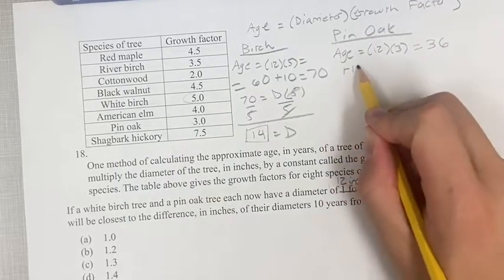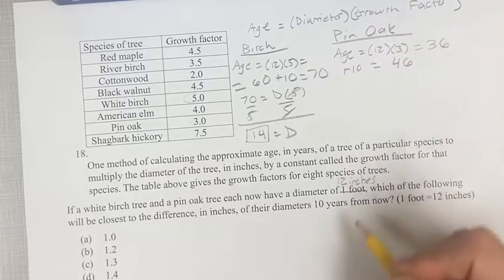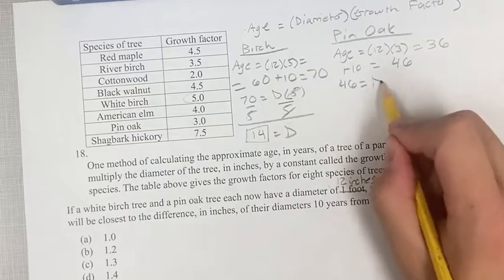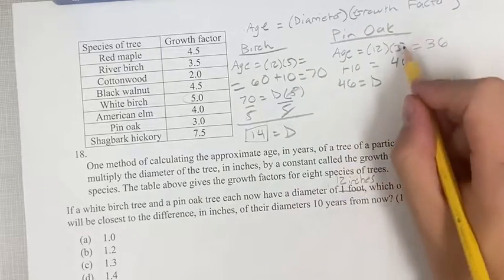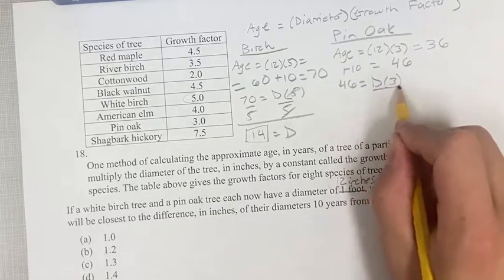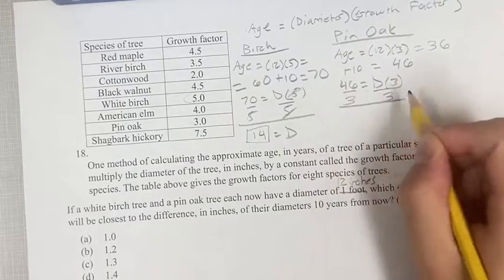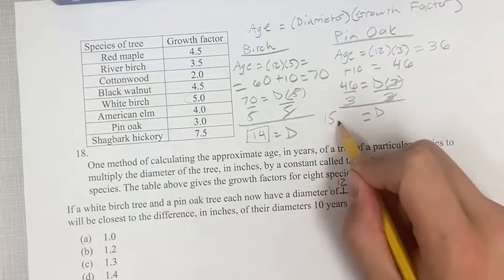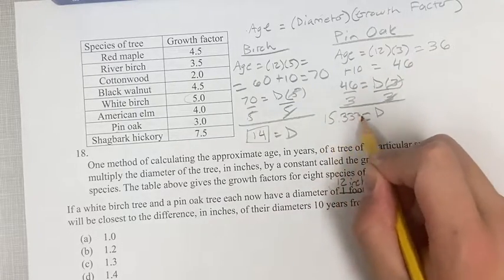So adding 10 to this, we're looking for the diameter when it's 46. So age is 46 is equal to diameter, let's call it d, times the growth factor, which is still 3. And dividing both sides by 3 to get the diameter of this one, we get d is equal to 46 divided by 3, which is 15 and 1 third, which is going to be 0.3 repeating.